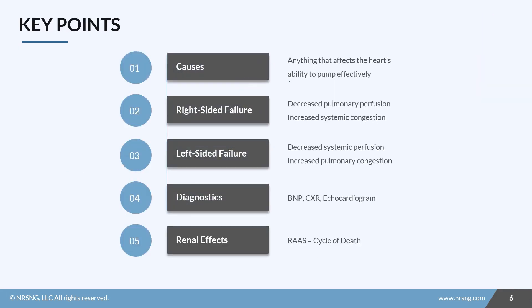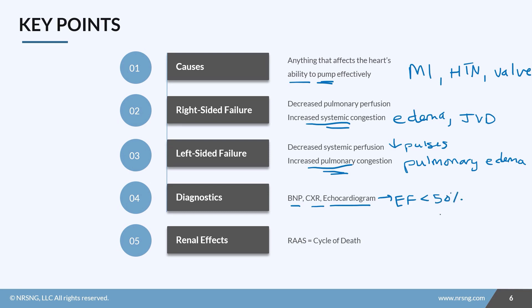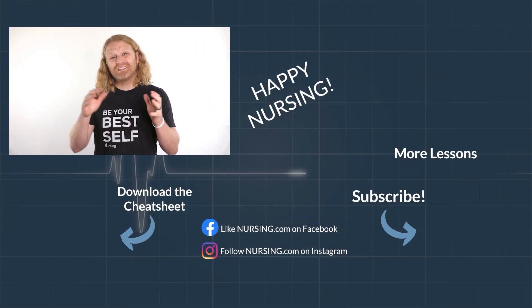To recap: anything that affects the heart's ability to pump — including MIs, hypertension, and valve disorders — can cause heart failure. In right-sided heart failure, decreased perfusion forward to the lungs and increased systemic congestion cause peripheral edema and JVD. In left-sided heart failure, decreased systemic perfusion and increased pulmonary congestion cause decreased pulses, pink frothy sputum, and significant shortness of breath. We use BNP, chest x-ray, and echocardiogram to diagnose, typically seeing an ejection fraction under 50%. The kidney impact can worsen the cycle, which we'll address in the next lesson.